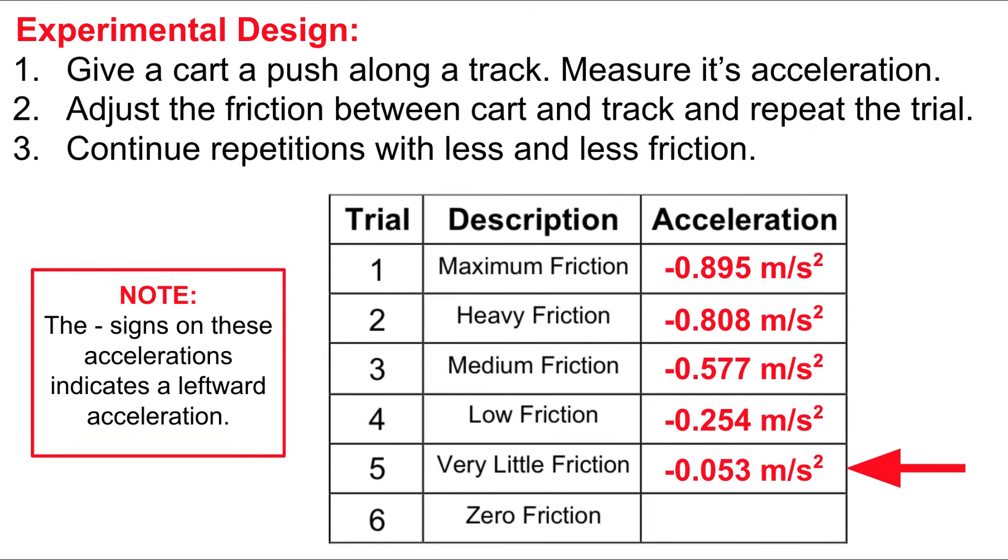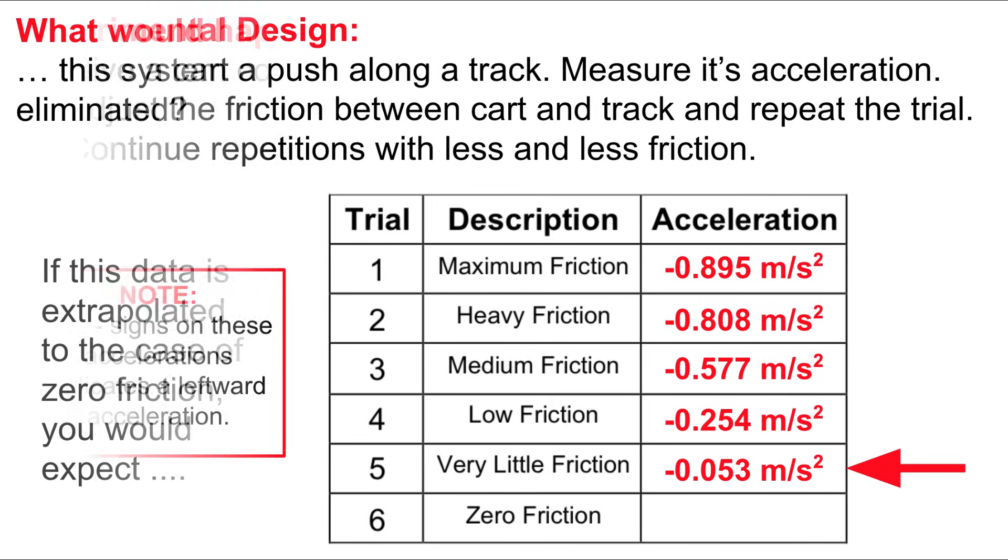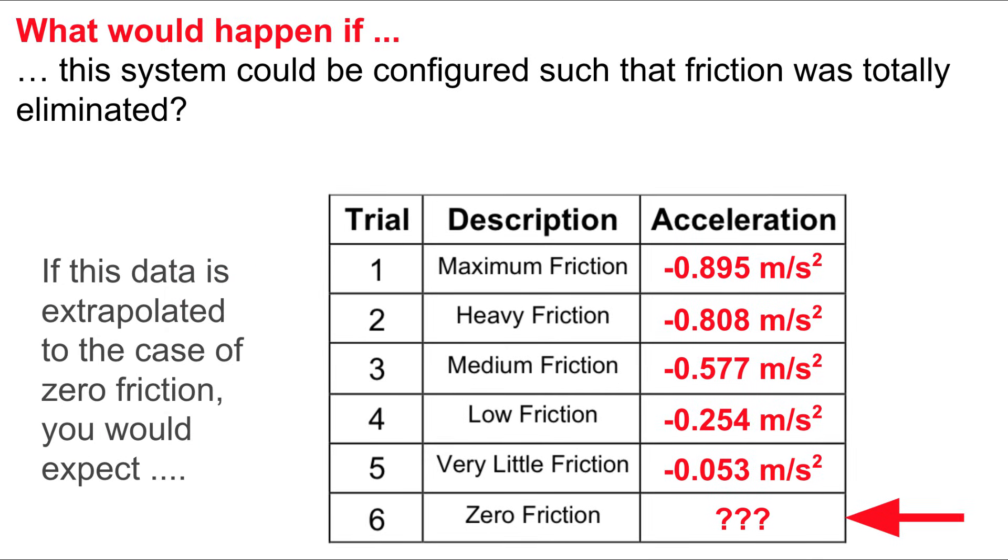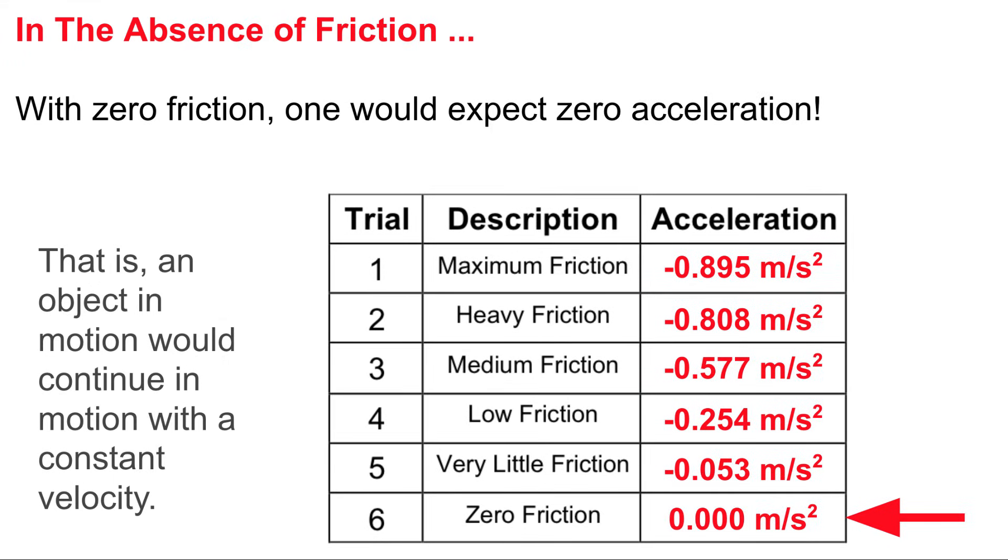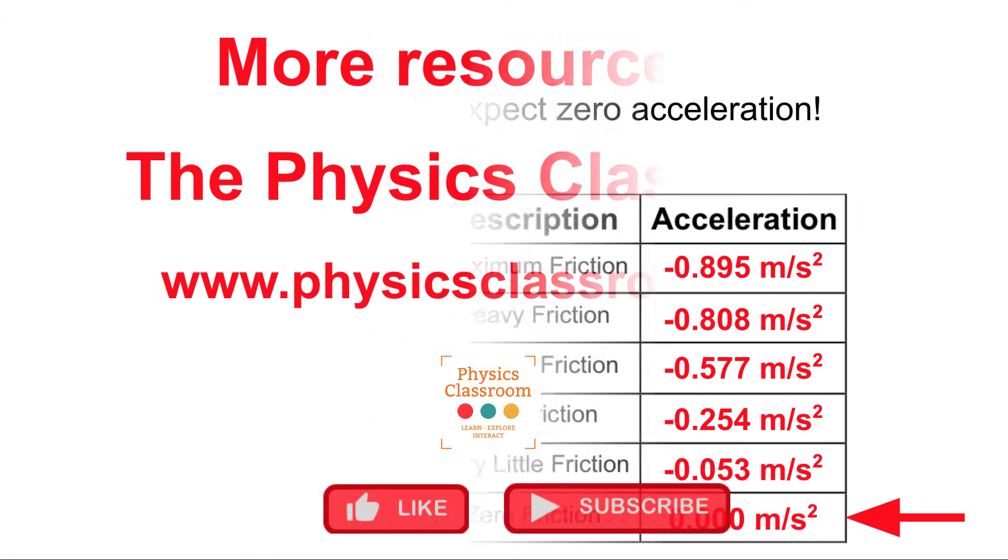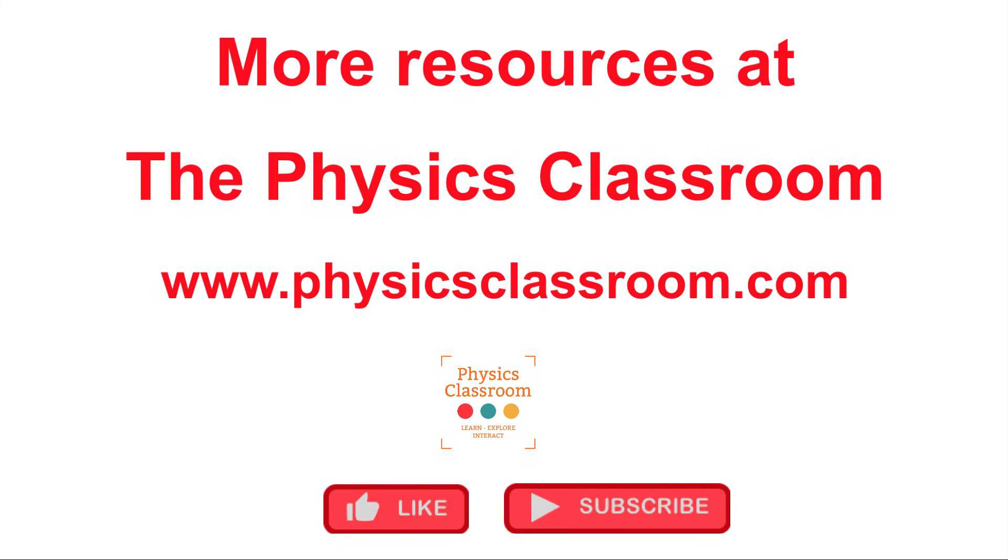Now we're going to ask the question, what would happen if we could have zero friction? If we could configure the system with zero friction and then begin to extrapolate the data that we see here in this table, what we might conclude is that with zero friction, there would be zero acceleration. That is, start an object to get it going, and it would continue moving with a constant speed in the same direction, a zero acceleration. That's Newton's first law of motion.